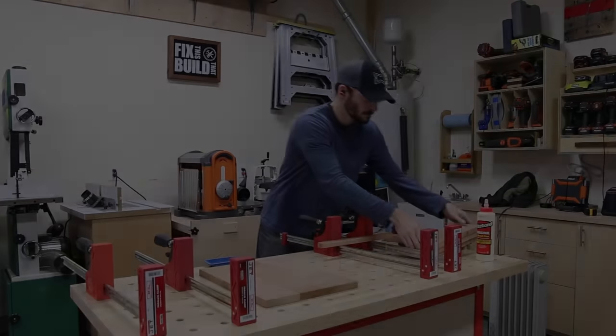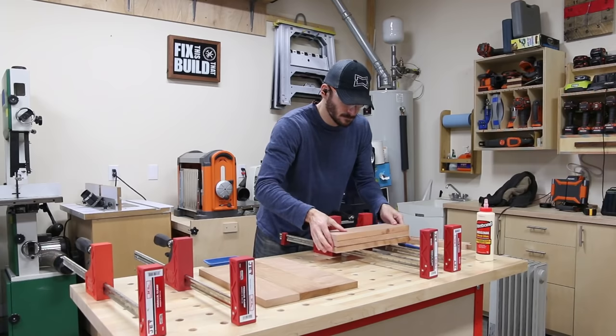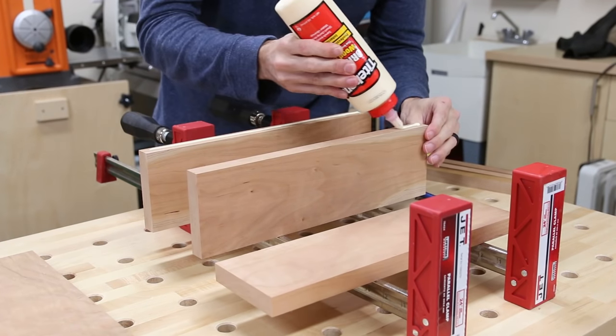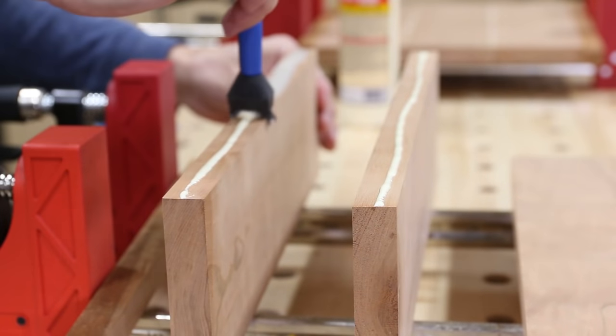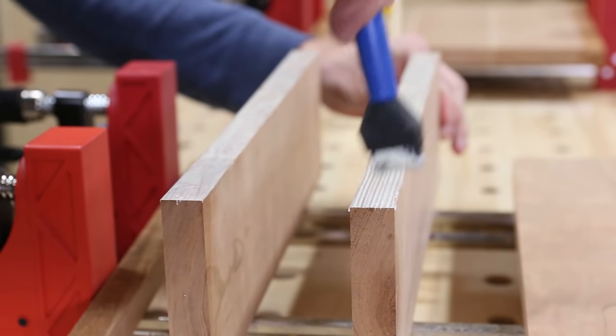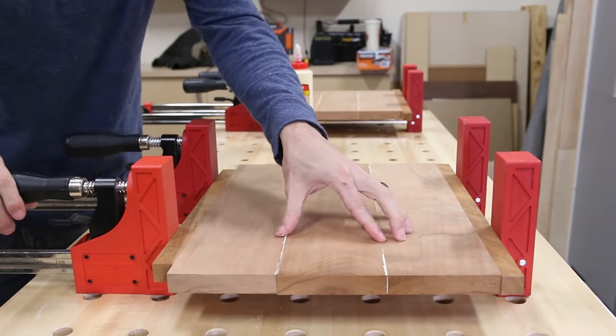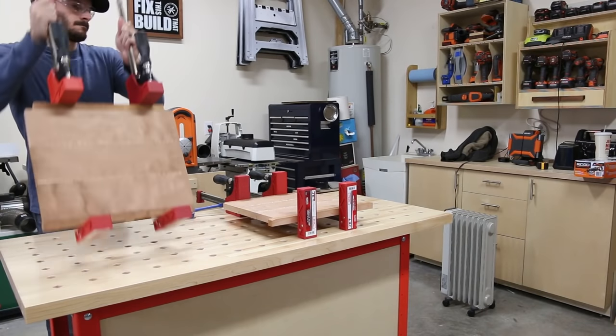Now the glue up is pretty simple. I just used yellow PVA glue on the edges, and you don't need a ton here, just enough to get a little bit of squeeze out once it's in the clamps. I didn't use any alignment aids like biscuits or dominoes. I just clamped the pieces together using some of the off cuts from the table saw to protect the edges. I put a nice squeeze on them and then I set the glue ups aside to dry.